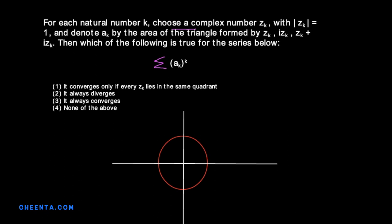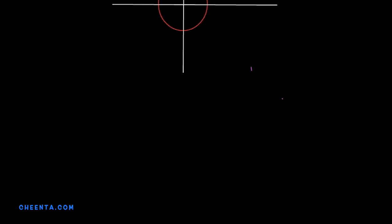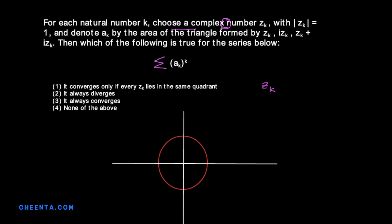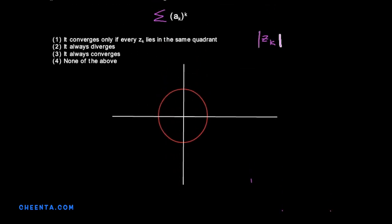It says that we start with the complex number zk. So this is the kth element of a sequence that we are building. It is selected such that absolute value of zk is equal to 1. What that means is it's a point on a unit circle.